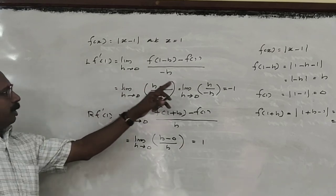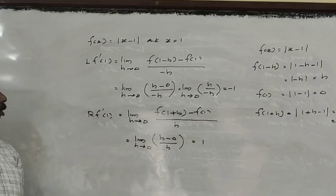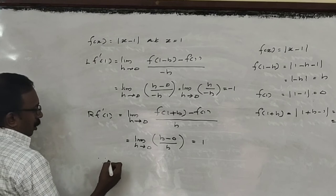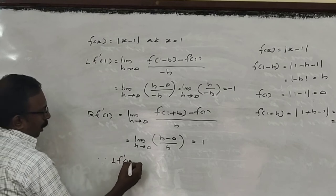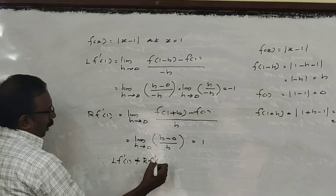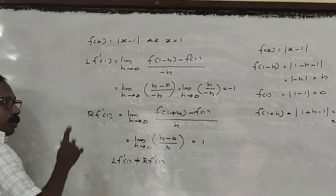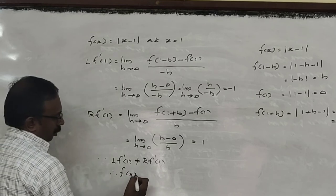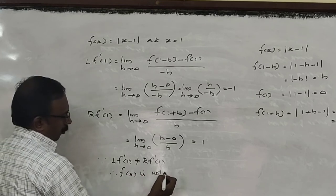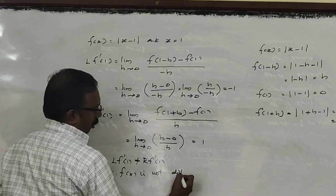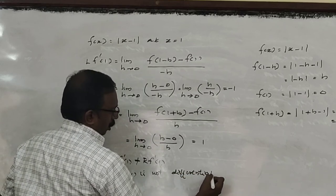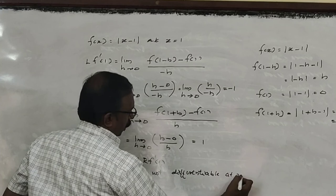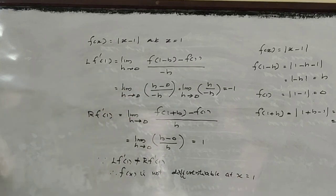Here, L of f'(1) is minus 1 and R of f'(1) is 1. Since L of f'(1) is not equal to R of f'(1), the function is not differentiable at x equals 1. Therefore the function is not differentiable at x = 1.